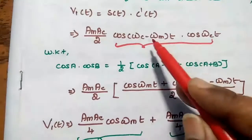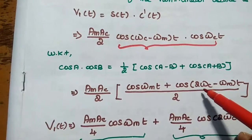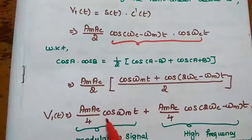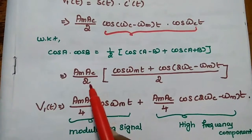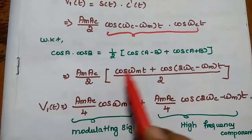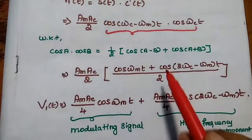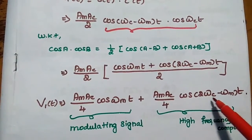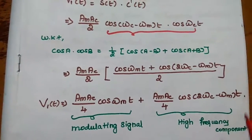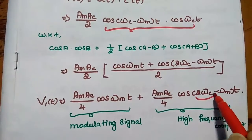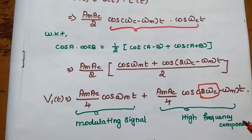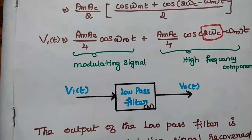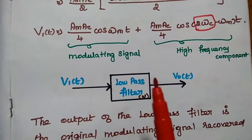Adding cos(A + B), we get (2ωC − ωM) / 2. Then we can write (A_M · A_C) / 4 and multiplying inside, we get cos(ωM·t) plus (A_M · A_C / 4) · cos((2ωC − ωM)·t). As mentioned, 2ωC is a high frequency component, so the low pass filter cannot allow this high frequency component through it.